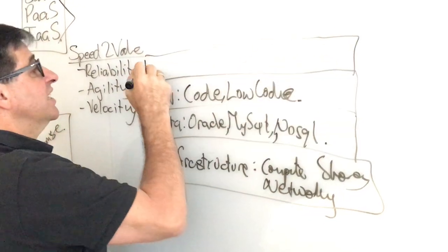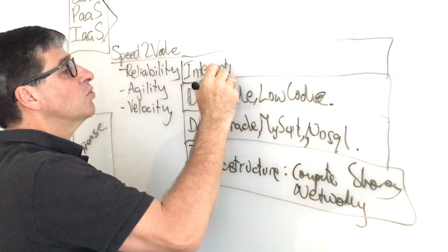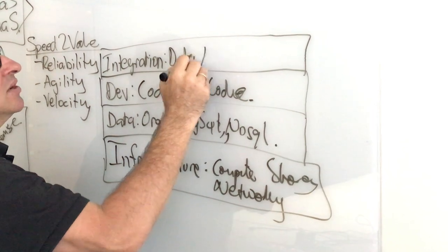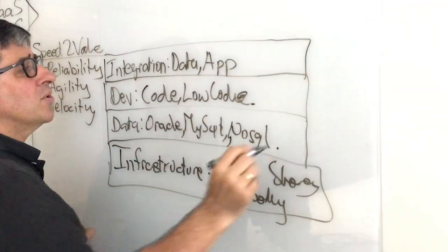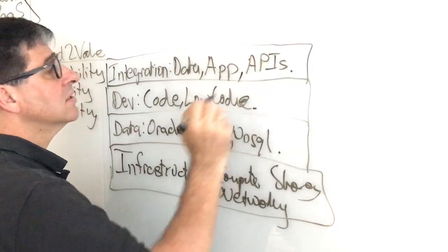Integration is important—the need to keep these applications in sync, whether it's data integration or application-to-application integration, whether you want to expose what you're doing as a set of APIs.